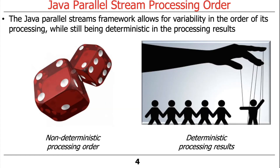The Java Streams framework, and most particularly the Java Parallel Streams framework, allows for some variability in the order of processing while still allowing determinism where needed in the results of that processing.